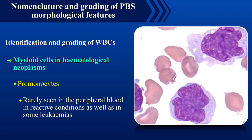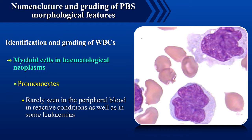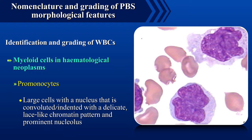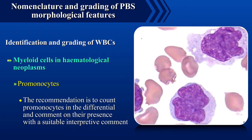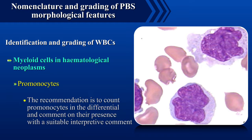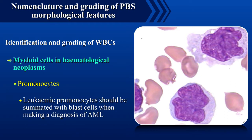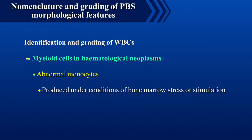Promonocytes may be rarely seen in the peripheral blood in reactive conditions as well as in some leukemias. They are large cells with a nucleus that is convoluted or indented with a delicate lace-like chromatin pattern and prominent nucleolus. The cytoplasm is bluish-gray and may contain a small number of fine red to violet granules. The recommendation is to count promonocytes in the differential and comment on their presence with a suitable interpretive comment.